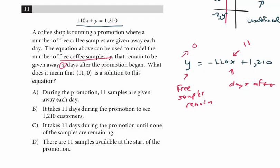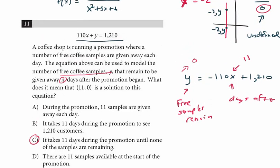What do we know? Well, there are 0 free samples remaining. And so again, it's just applying this to a real life scenario. If you look at the choices, the answer is C. It takes 11 days during the promotion until none of the samples are remaining, so y = 0. And that is the last algebra question.